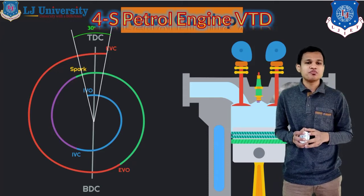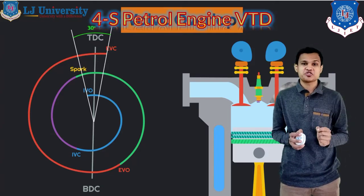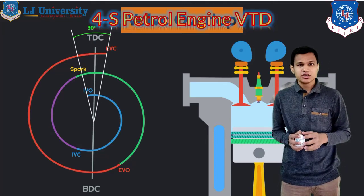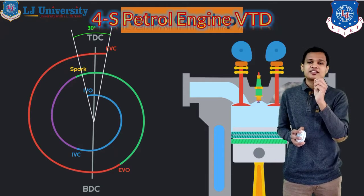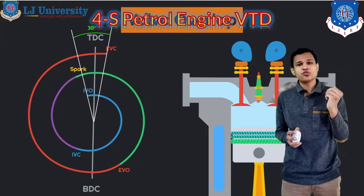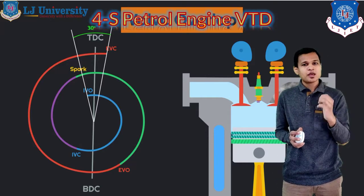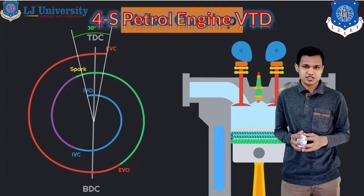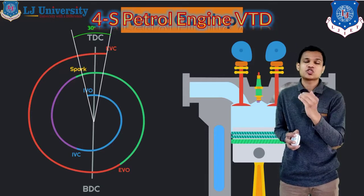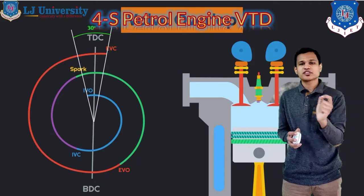Valve overlapping means that during this time both valves are kept open simultaneously — the inlet valve is also open and the exhaust valve is also open. In this case, the scavenging process will be necessary, which means the inlet charge has to force out the exhaust charges. If the pressure of the inlet charge is lower, it will go out with the exhaust charge and wastage of fuel will happen.